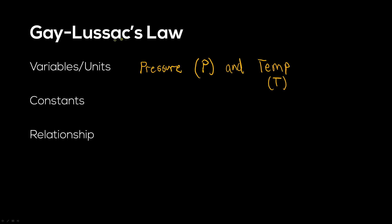For Gay-Lussac's Law to be true, we have to keep two variables constant: the number of particles (n) and the volume (V).